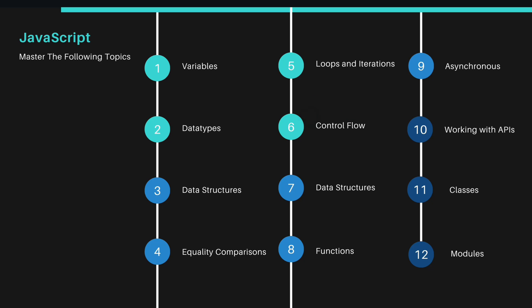These are the important topics because when you start working and building applications — whether a DApp or a front-end application — you're going to use all of them heavily. You'll declare different types of variables, build data types and data structures, use equality comparison, build loops like for-loop or while-loop, use control flow and advanced data structures for data iteration, build different types of functions like arrow functions, normal functions, and async functions, and use asynchronous features introduced with ES6 after 2018.